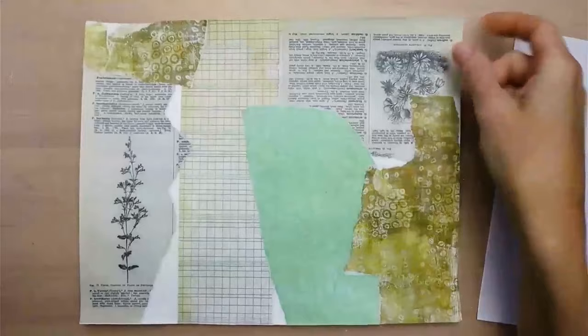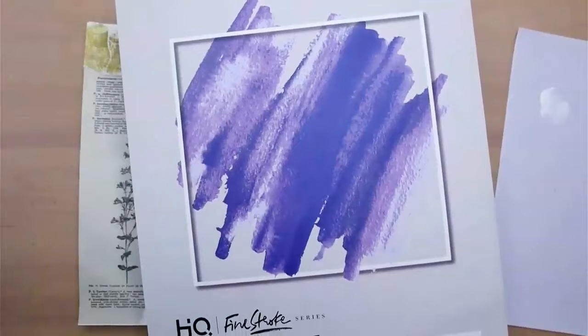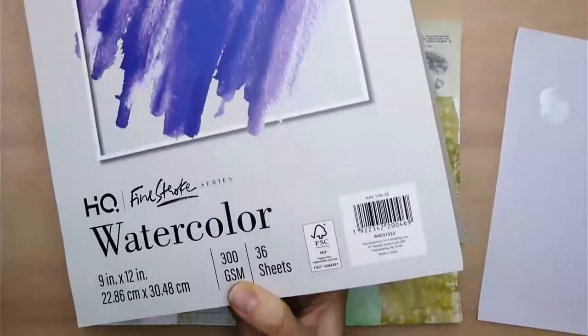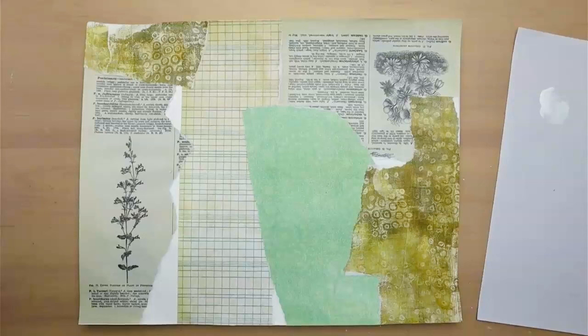I'm using watercolor paper today, 300 gsm, that's about 140 pounds. It's a pretty thick paper so it's really great for collage work and putting down a lot of layers because it doesn't get too buckly.